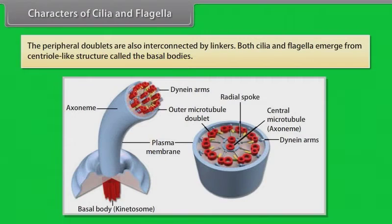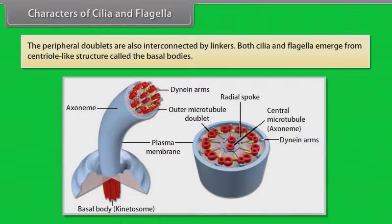The peripheral doublets are also interconnected by linkers. Both cilia and flagella emerge from a centriole-like structure called the basal body.